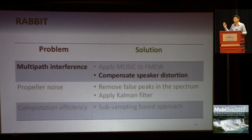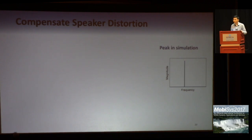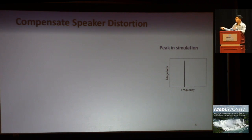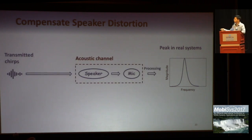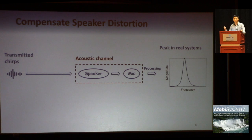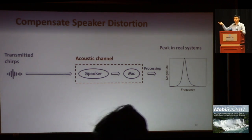Let me talk about the impact of speaker distortion. In our previous example, we saw an extremely sharp peak in the spectrum derived by MUSIC, but this was based on simulation. When we apply the approach to the real system, we see a much quieter peak, which means lower capability to resolve multipath. After close investigation, we found this problem is actually due to distortion in the acoustic channel. Such distortion makes the signals deviate from the model required by MUSIC, and hence reduces performance.